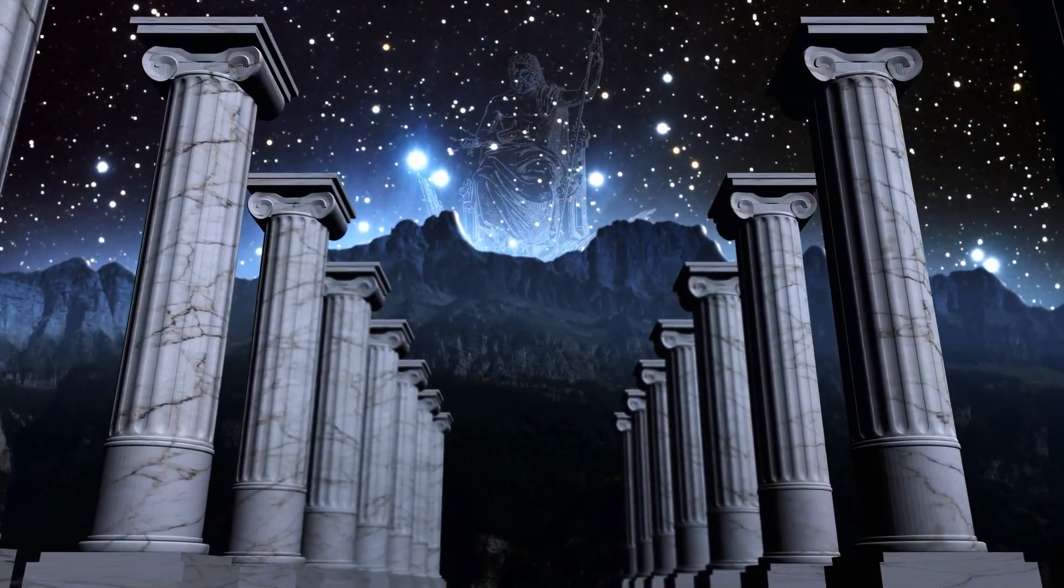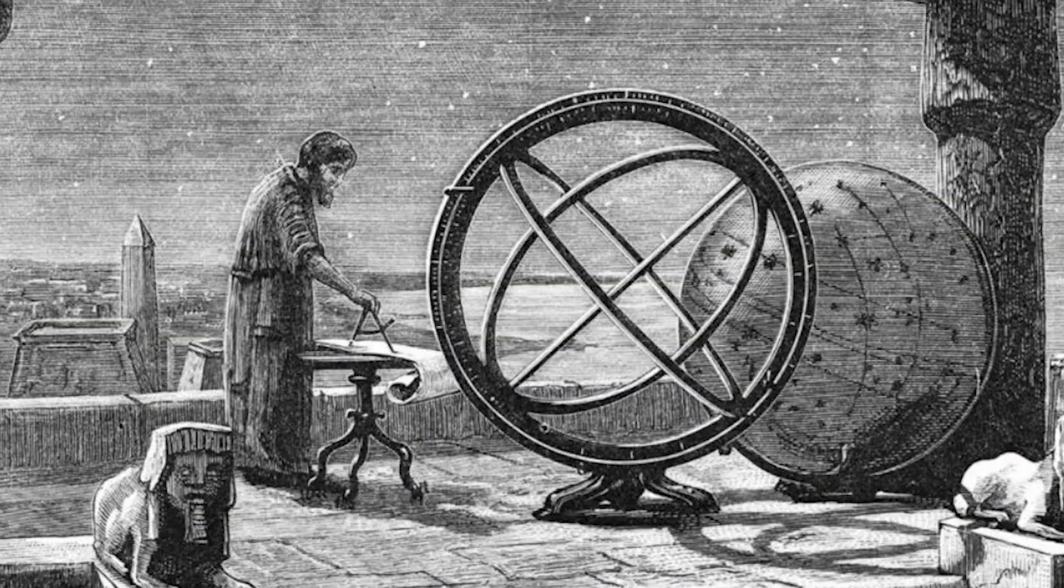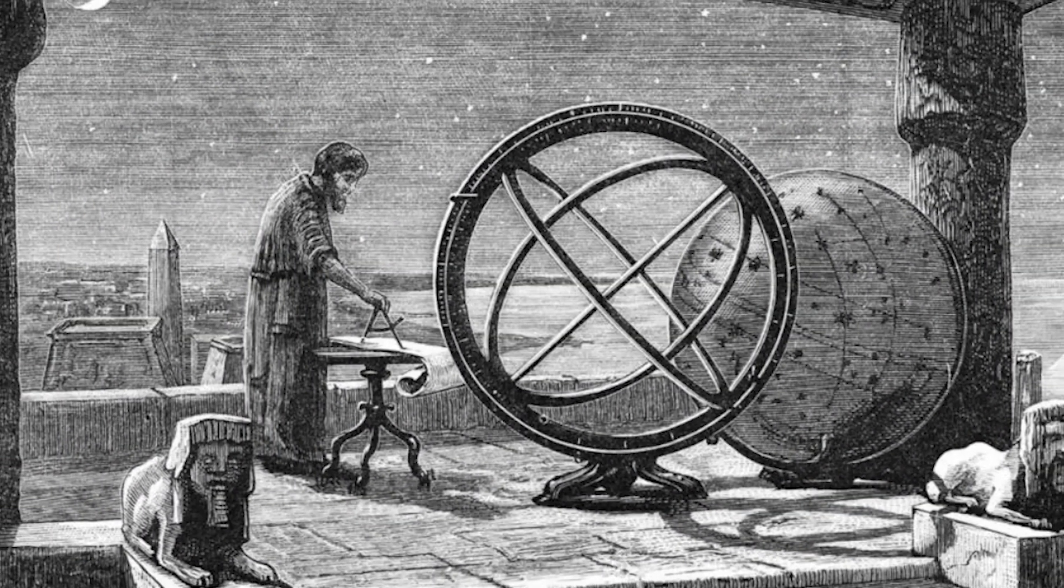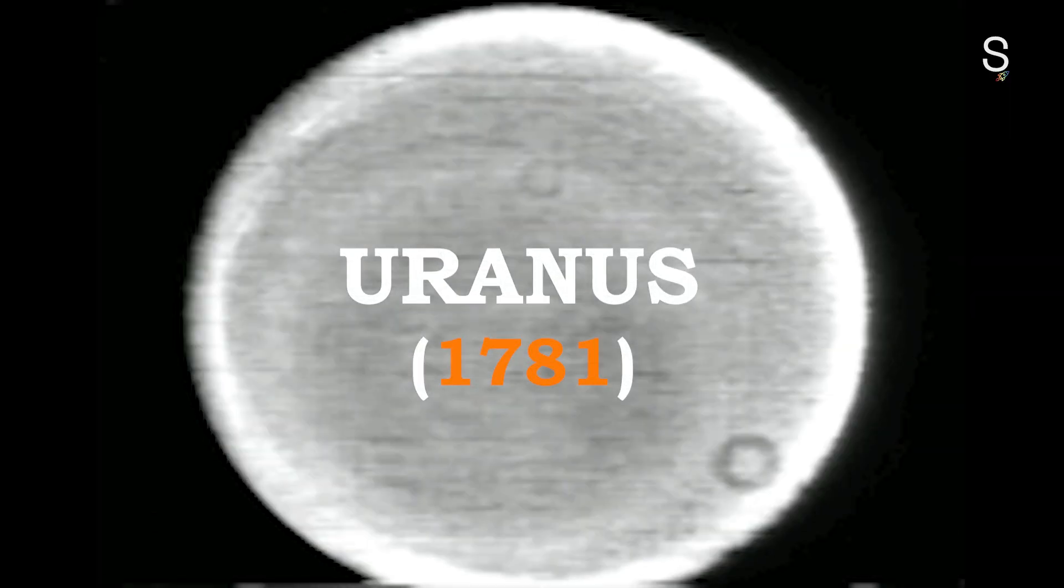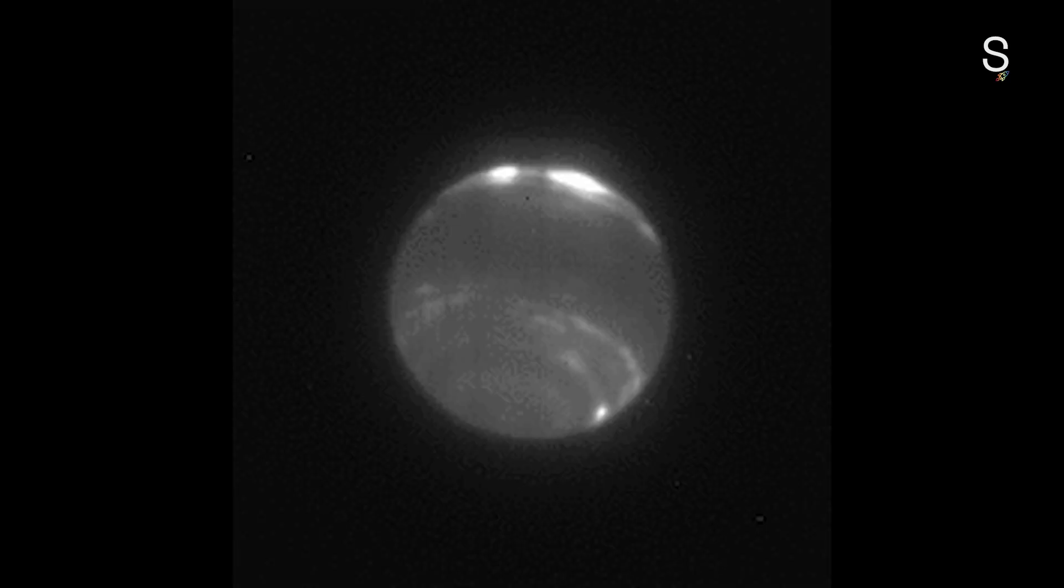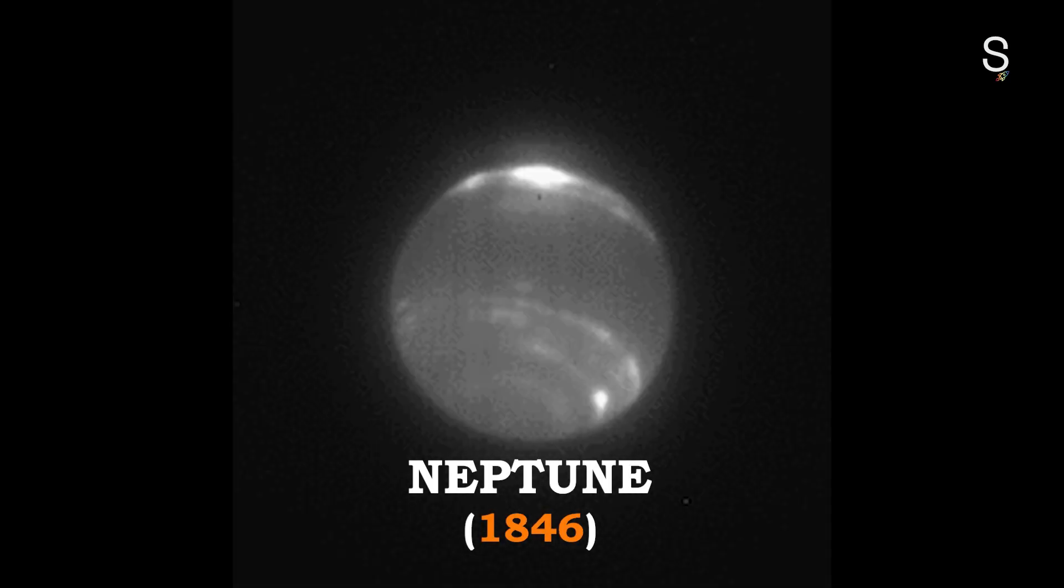When it comes to the exploration of the solar system, astronomers are solely responsible for the discovery of two large planets that would have been unknown to the ancients. These planets are Uranus, which was discovered in 1781, and Neptune, which was discovered in 1846.